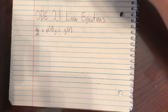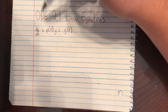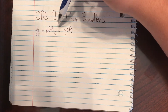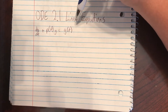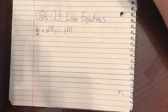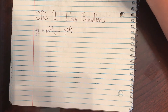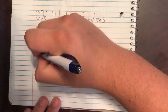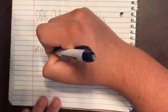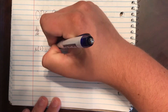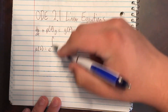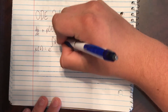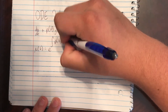So we have this generalized format: dy/dt plus p of t times y is equal to g of t. So whenever we're solving this, we always want to find some mu of t, which is actually going to be equal to e to the integral of p of t dt.